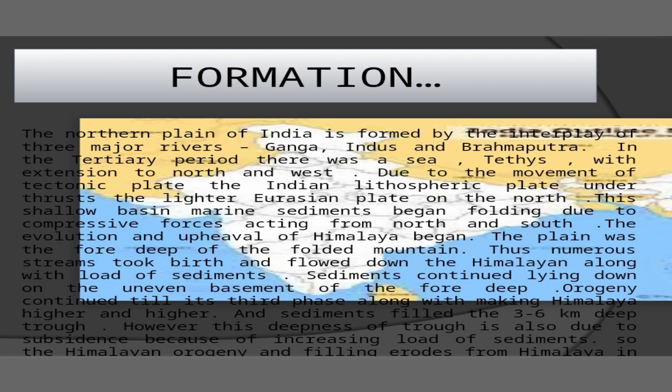Number one: diastrophic plains; peneplains; flood plains and delta plains; glaciated plains; and minor plains.